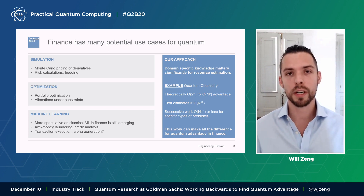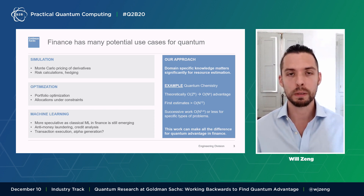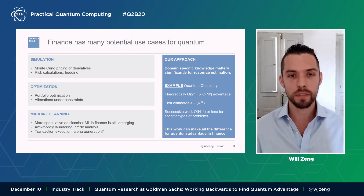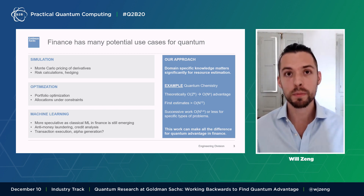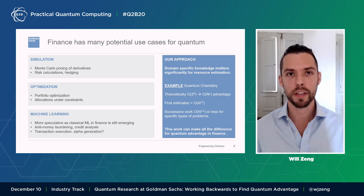As an example, we're inspired by what's happened in quantum chemistry. In quantum chemistry, you have exponential-to-polynomial speed-ups for lots of simulations. But over the last 10 to 15 years, the practical numbers for what that polynomial should be have gone from very large to smaller and more reasonable estimates for certain heuristics and certain problems. These details matter, and they can make all the difference for quantum advantage in finance.